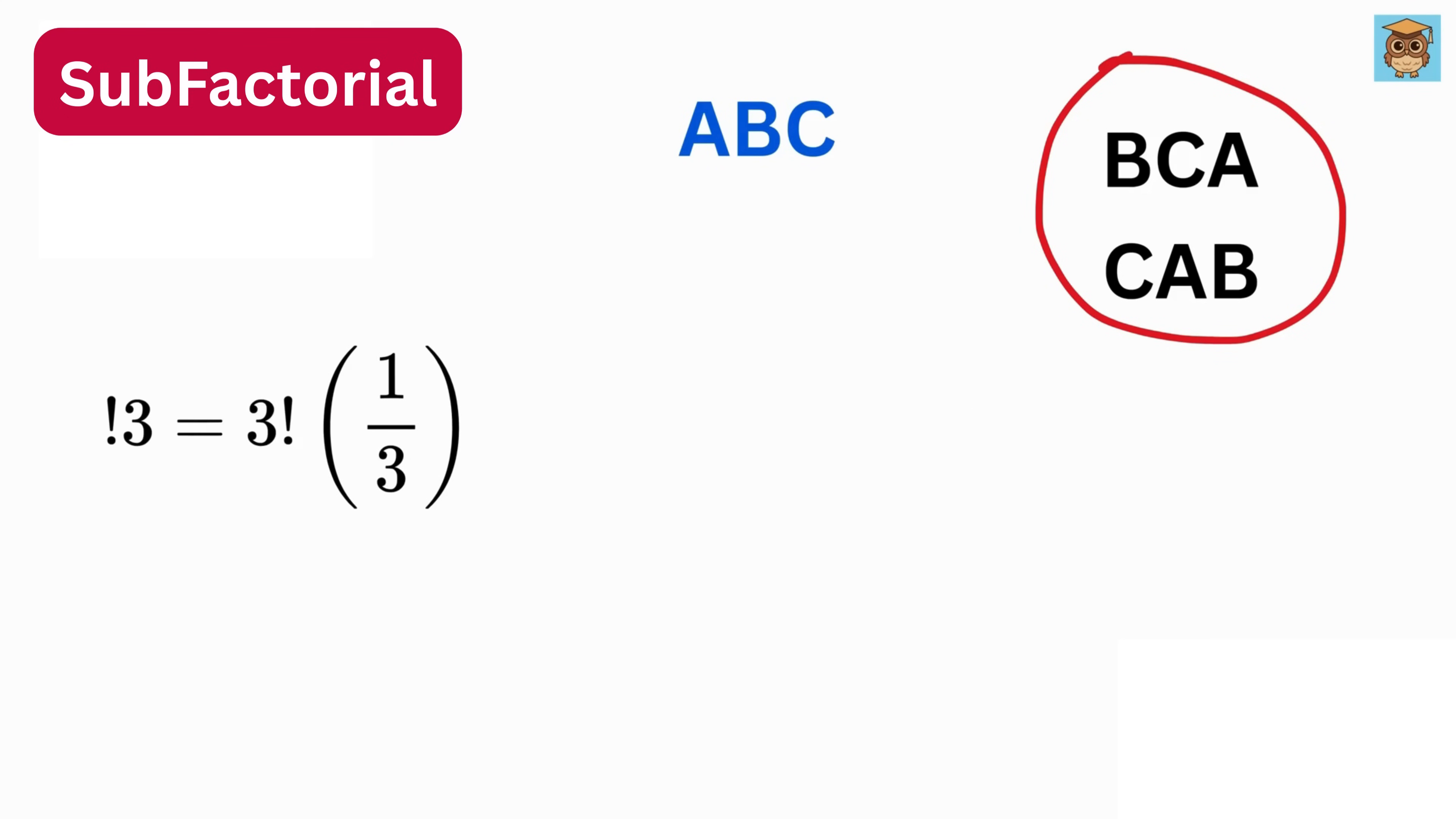After that, we multiply the answer with 3 factorial, which is 6. So we do 6 times 1 divided by 3, which gives 2.